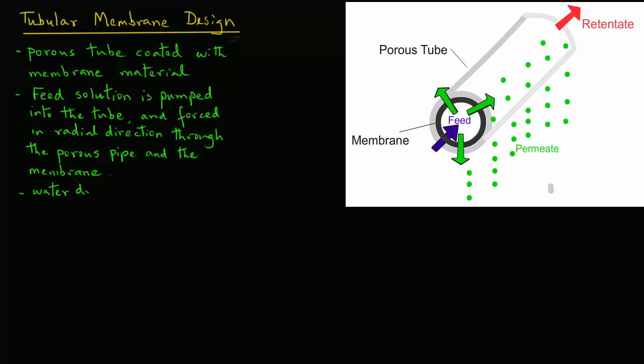The permeate, or water, depending on what type of membrane is being used, will drip from the outside surface, while the retentate stream leaves from the other end of the tube.